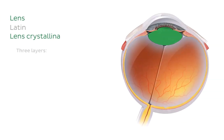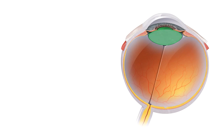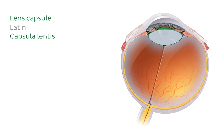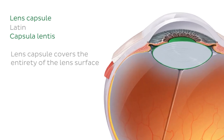Now let's discuss the layers of the lens in detail. The lens can be divided into three layers: the lens capsule, the lens epithelium, and the lens fibres. Looking at the image here, the part highlighted in green is the lens capsule. As you can see, the lens capsule covers the entirety of the lens surface.